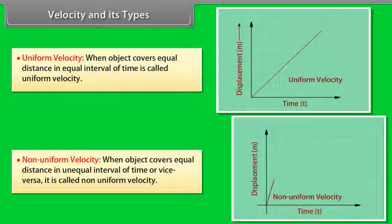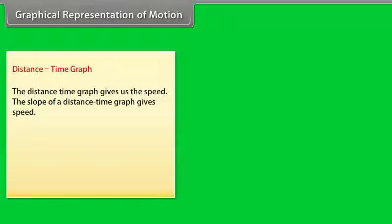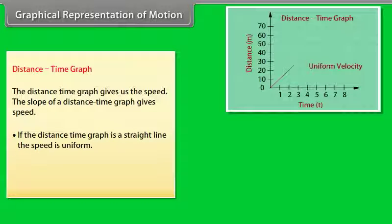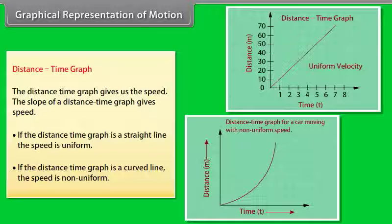Non-uniform velocity: when an object covers equal distances in unequal intervals of time, or vice versa, it is called non-uniform velocity. Graphical representation of motion — distance-time graph: the distance-time graph gives us the speed. The slope of a distance-time graph gives speed. If the distance-time graph is a straight line, the speed is uniform; if it is a curved line, the speed is non-uniform.